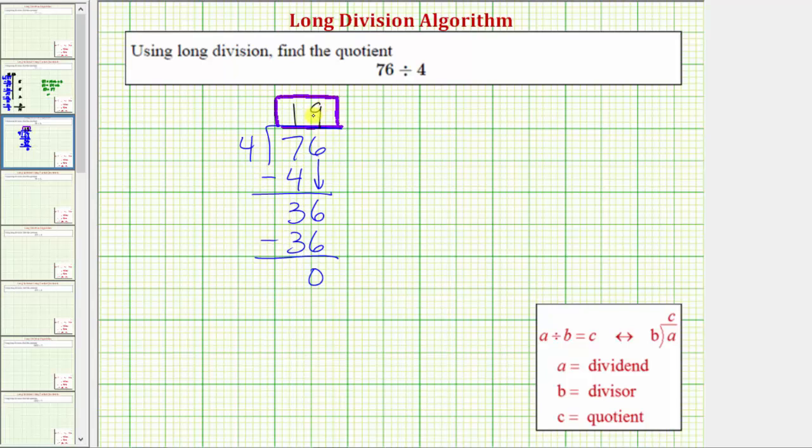This division problem tells us there are 19 fours in 76. Or because 76 divided by four is equal to 19, 19 times four equals 76. Again, 19 copies or 19 groups of four equals 76. I hope you found this helpful.